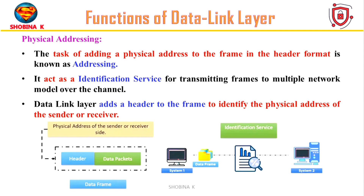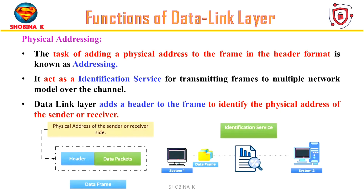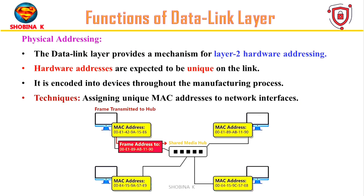The next function is physical addressing, also known as hardware addressing or MAC addressing, which is a fundamental function of the data link layer. Physical addressing enables devices to uniquely identify each other on a local network segment. Adding a physical address to frame headers helps identify the sender and receiver devices on the network. Hardware addresses, also known as MAC addresses, are unique identifiers assigned to devices during manufacturing, and the data link layer provides an addressing mechanism for managing and utilizing these addresses for communication within a local network segment.